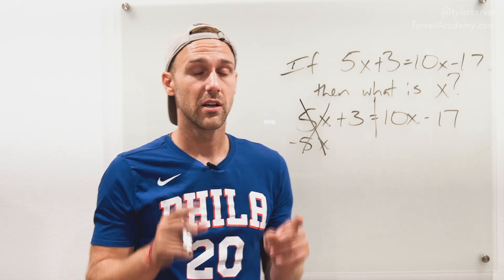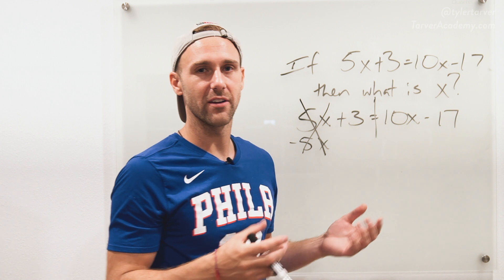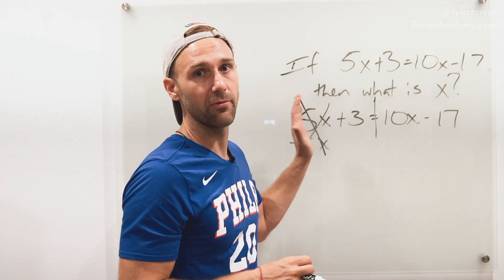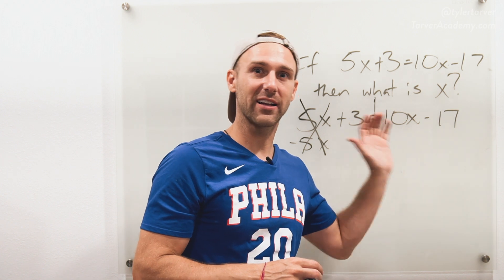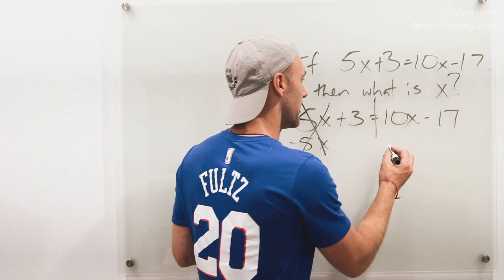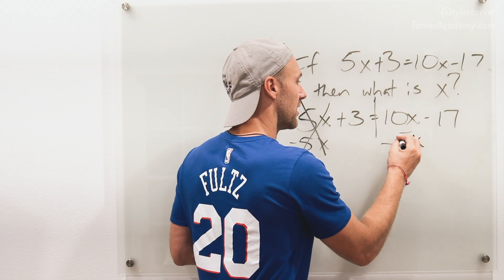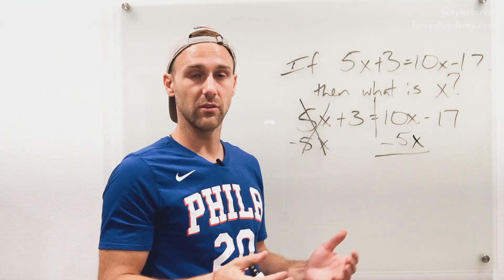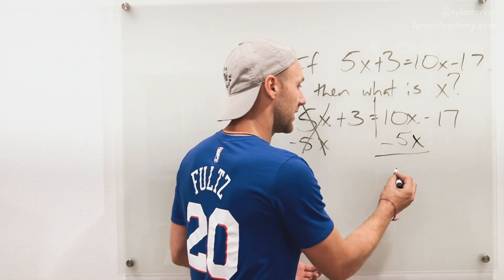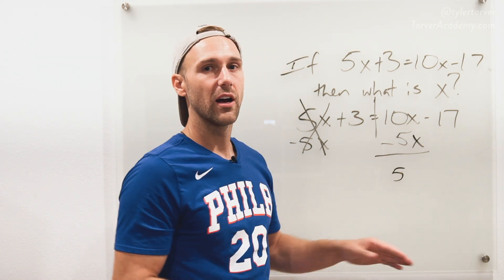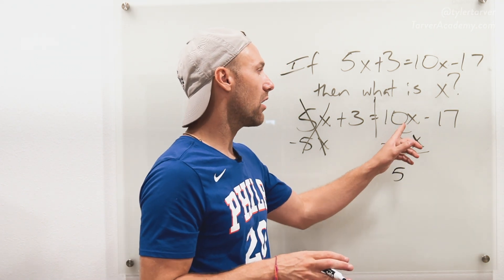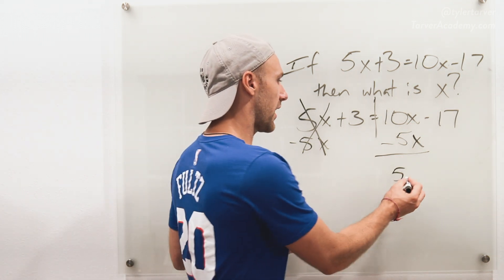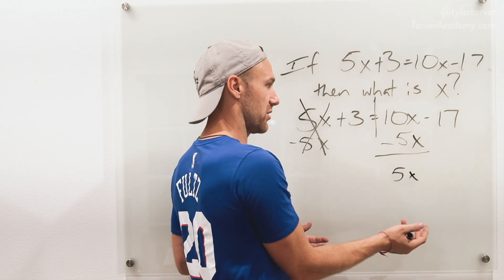Here's the deal — a math rule says if you subtract it from one side, you have to subtract it from the other side as well. If not, you're changing it. So we've got to subtract 5x over here as well. What's 10x minus 5x? What's 10 minus 5? It's 5. Now, a lot of people mess up right here — they'll think the x is gone. No, the variable is still there. All it does is subtract the numbers.